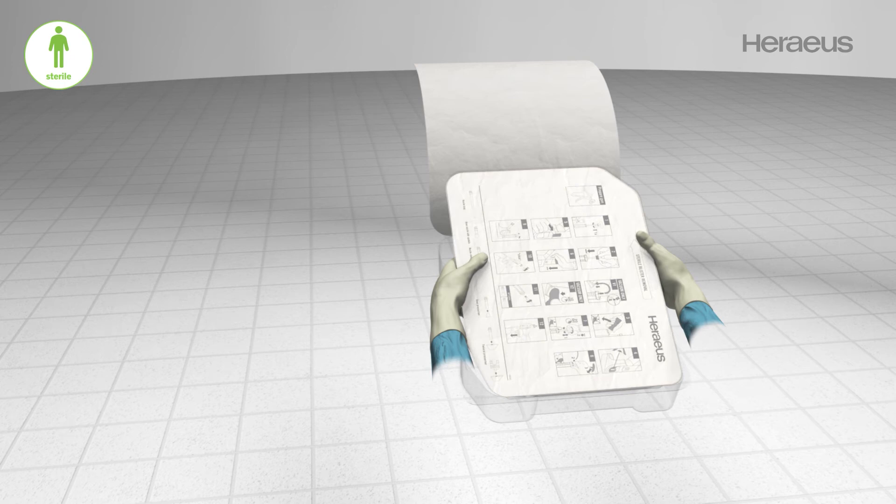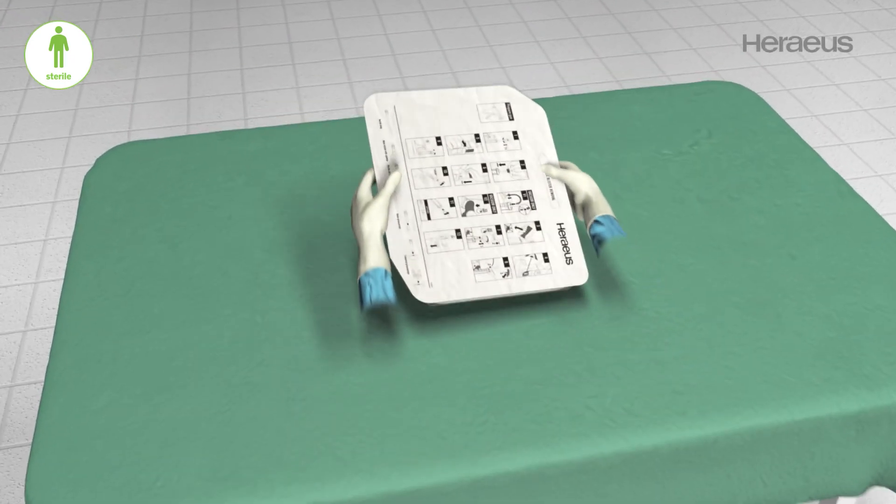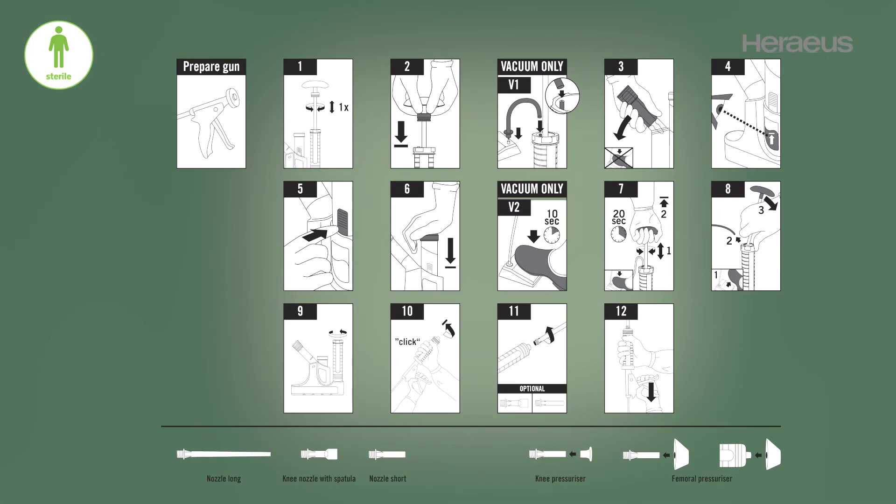The inner blister is sterile and can stay in the sterile area of the OR. On the inner Tyvek, the handling steps for use with and without vacuum are shown.